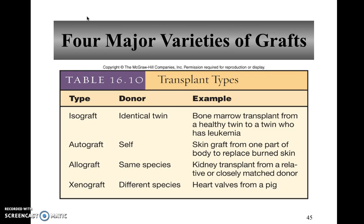Xenografts involve different species — the donor is usually a non-human species. This generally doesn't work very well, with the exception of heart valves from pigs used for people with a heart murmur or leaky heart valve. But most of the time, xenografts cause significant problems.